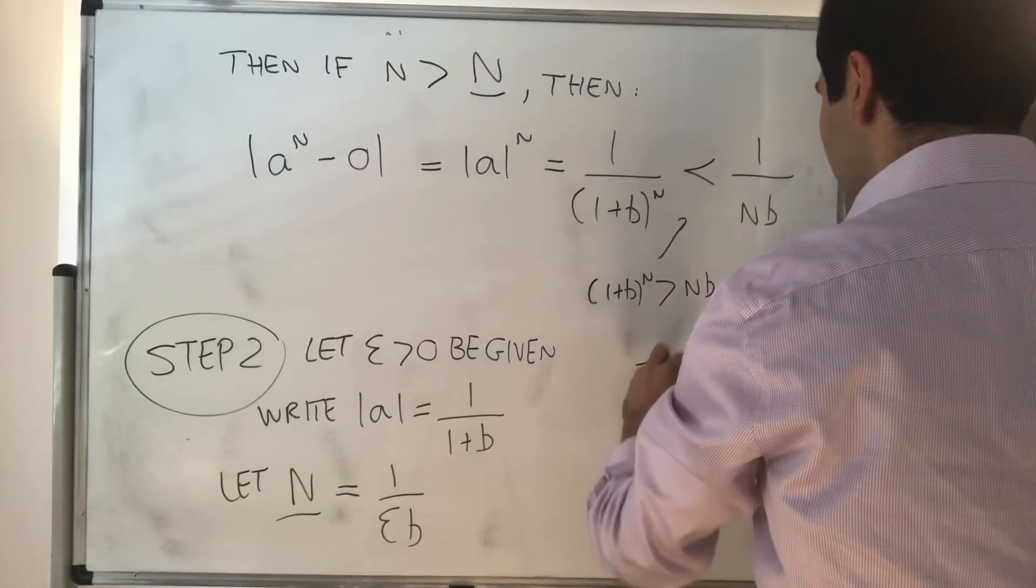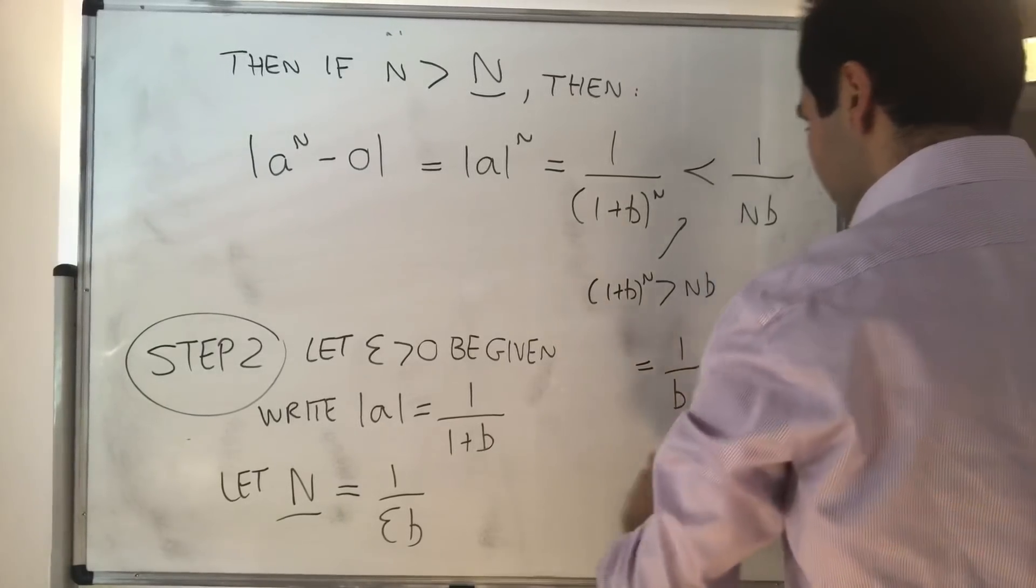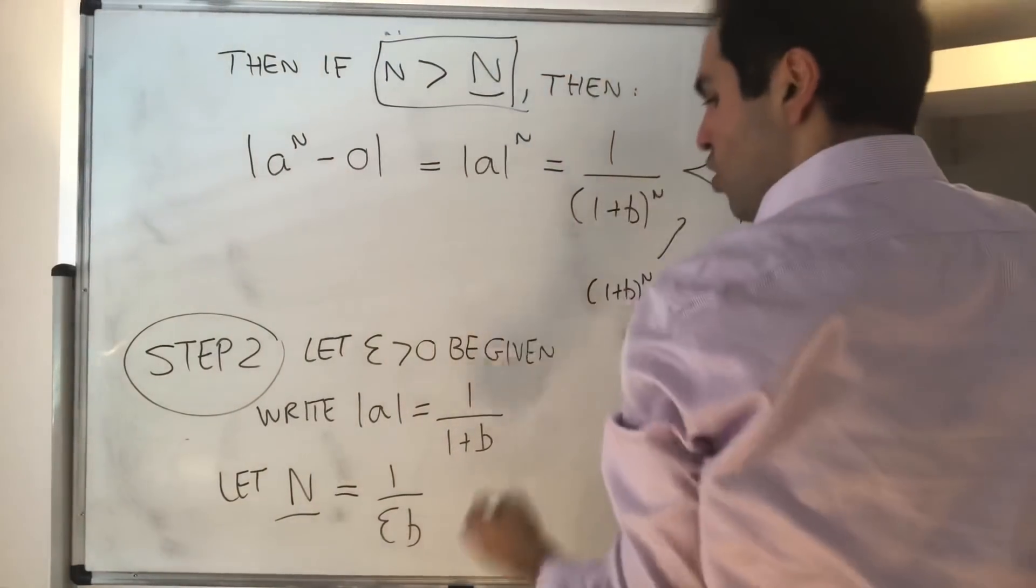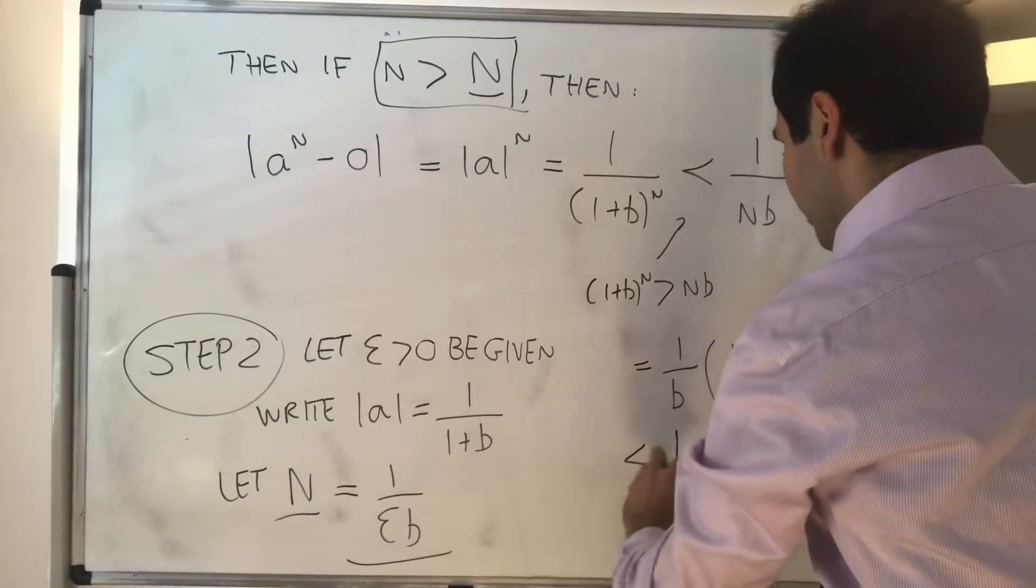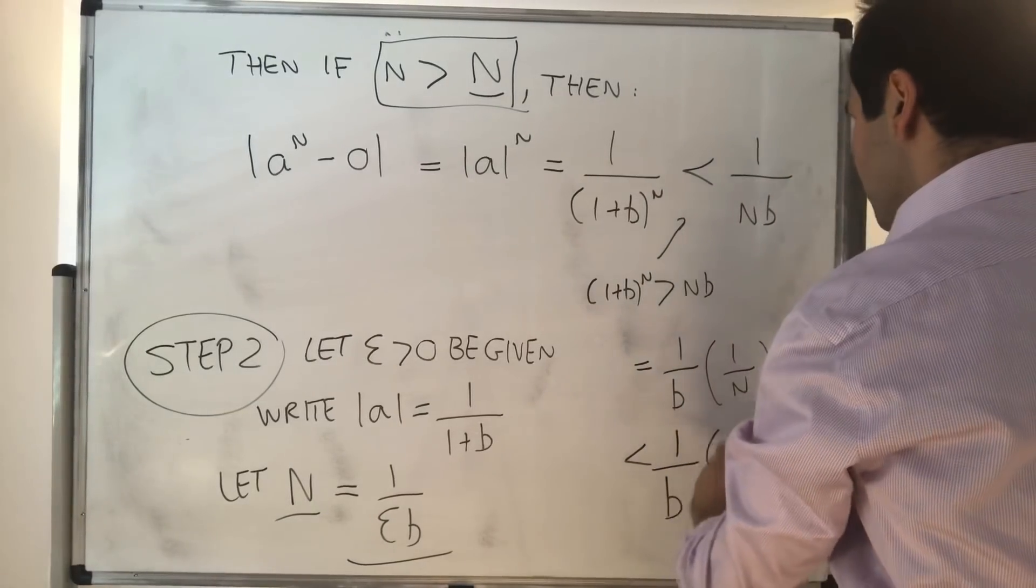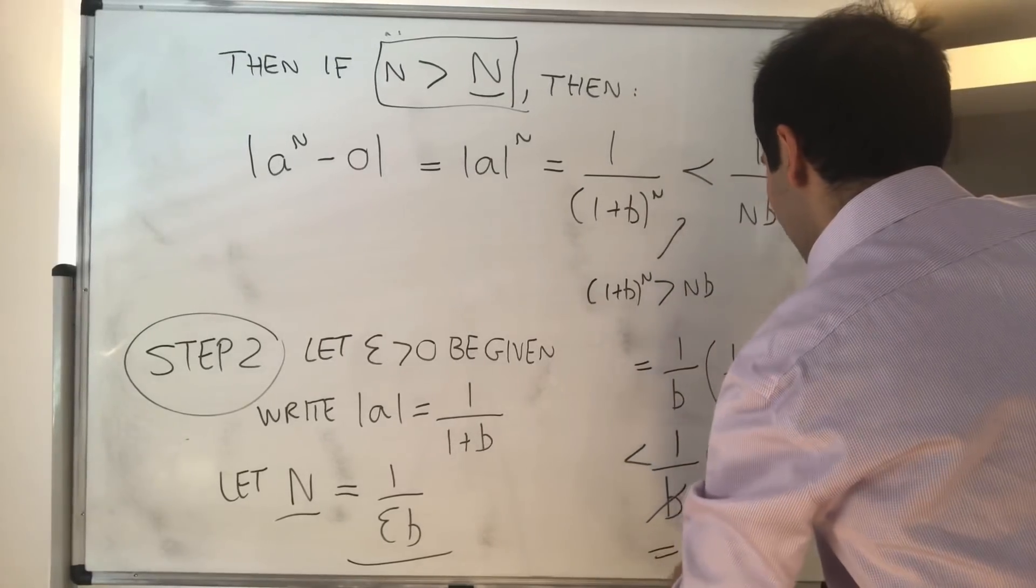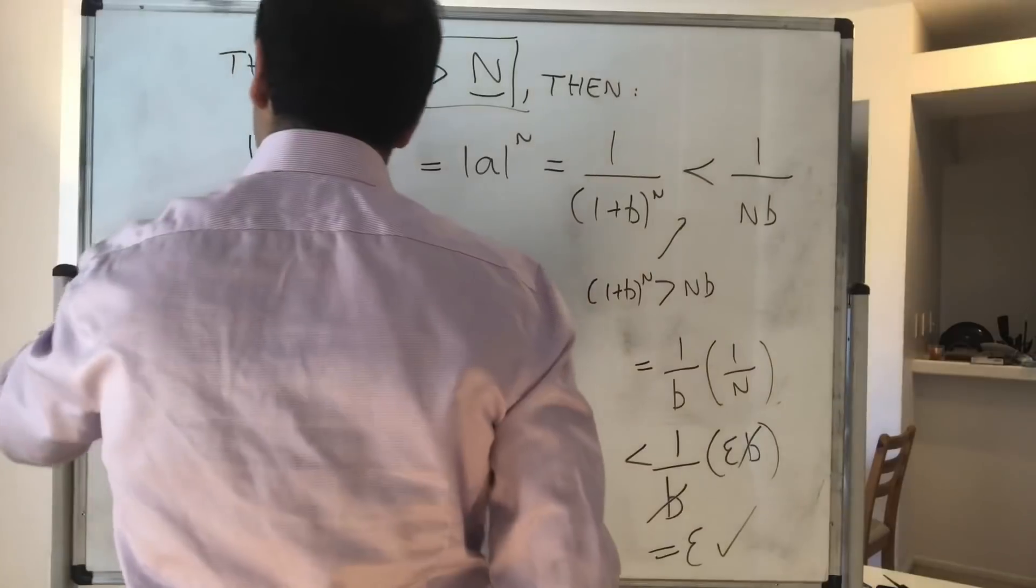But then, that just becomes 1 over b times 1 over n, and because n is bigger than our threshold, and our threshold is 1 over epsilon b, this becomes less than 1 over b times epsilon b. This cancels out, and we get epsilon, and therefore, we are done.